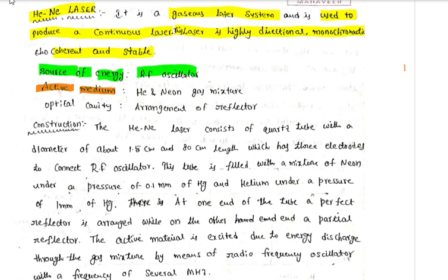The active medium used to achieve population inversion is a helium-neon gas mixture. The ratio of the mixture is 10 to 1 — that is, 10 helium atoms for every 1 neon atom.